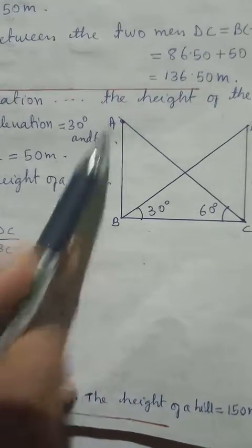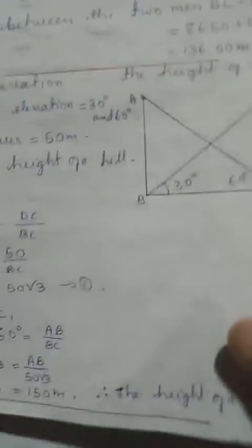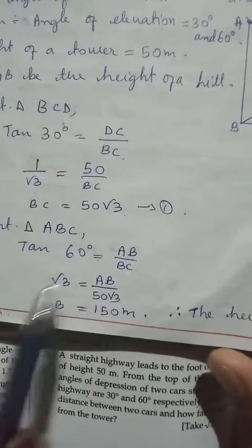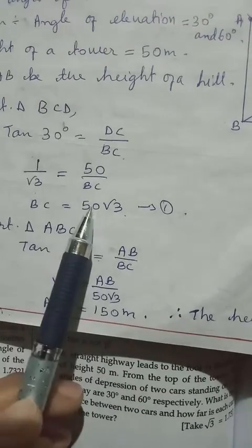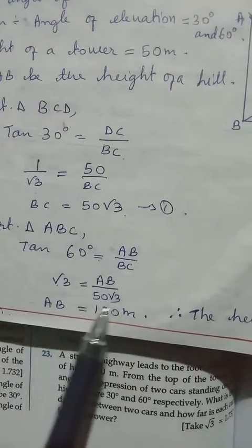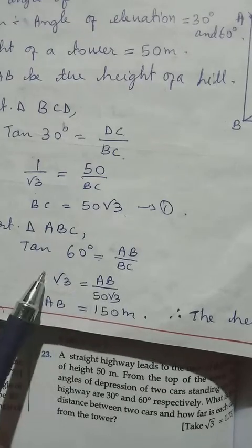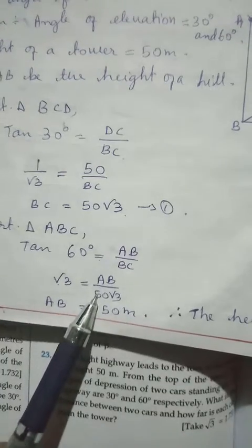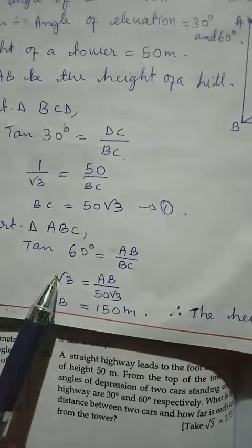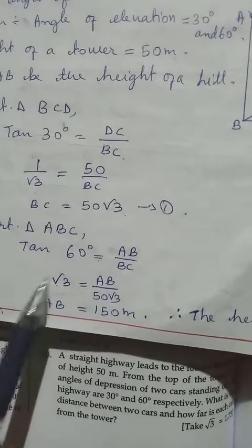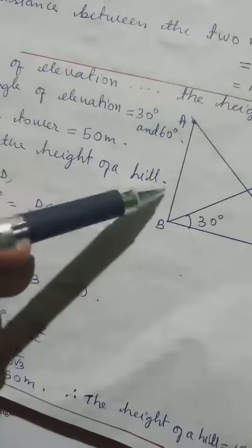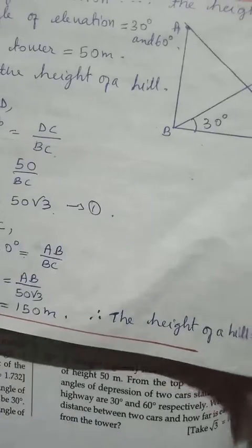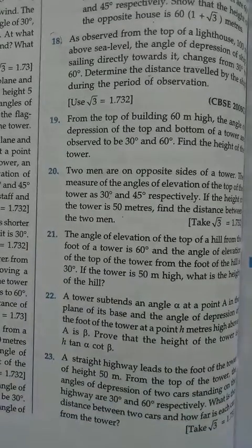Now in triangle ABC with angle 60°: tan 60° = AB/BC. From the table, tan 60° = √3. BC we found to be 50√3. Cross multiplying: AB = 50√3 × √3 = 50 × 3 = 150. So the height of the hill is 150 meters. Let's continue to number 22.